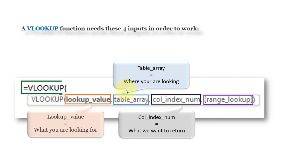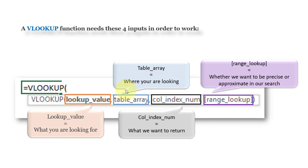Range lookup determines whether you want to retrieve an approximate match value or an exact match. This is an optional parameter and approximate matching is the default. For approximate matching you can pass either 1 or TRUE, and for exact matching you can enter 0 or FALSE.